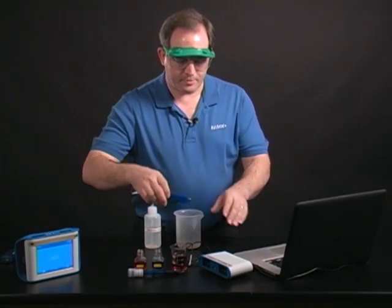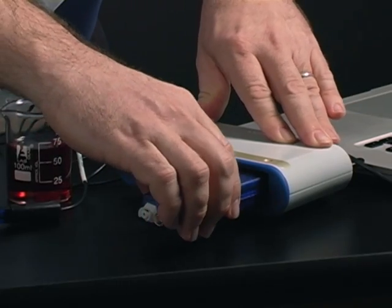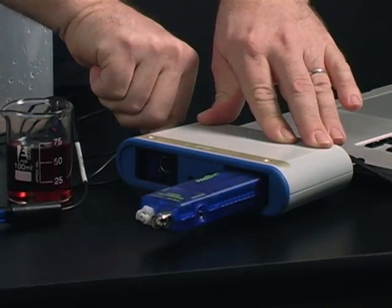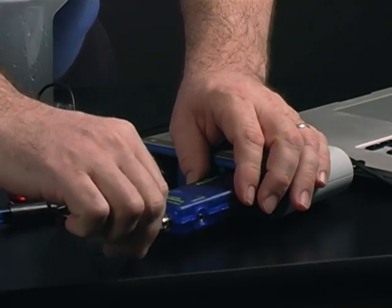I'm going to use the chemistry sensor and connect it to my SparkLink. Then I'll take the probe and connect that to the end of the sensor.